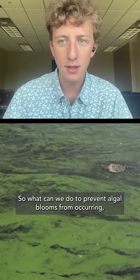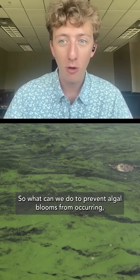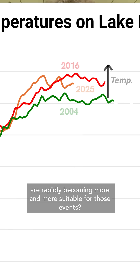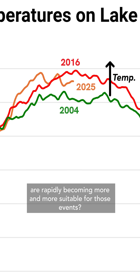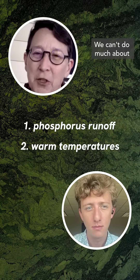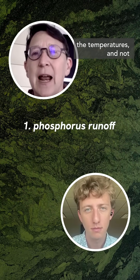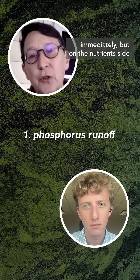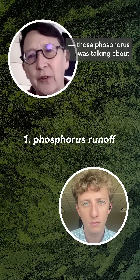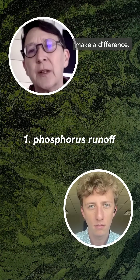So what can we do to prevent algal blooms from occurring, even when water conditions are rapidly becoming more and more suitable for those events? We can't do much about the temperatures, not immediately. But on the nutrients side — that phosphorus I was talking about — that's where we can really make a difference.